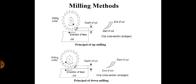In down milling, shown in the bottom figure, the metal is removed when the work piece direction and cutter direction are in the same direction. The direction of the cutter is clockwise, and the work piece moves in the same direction.